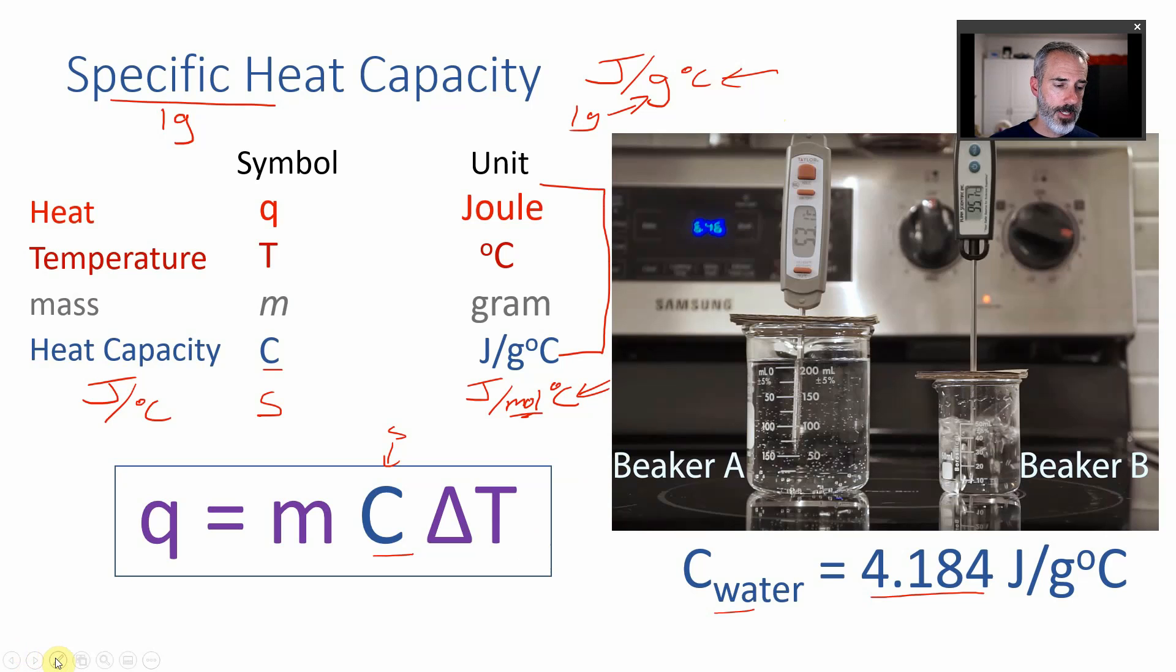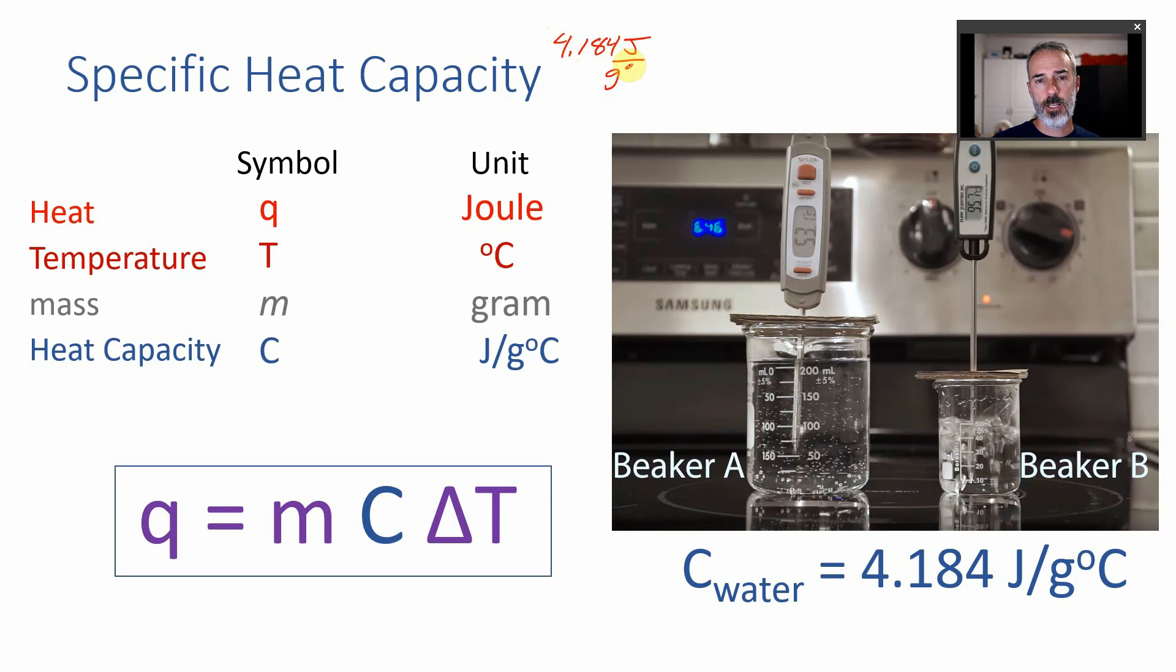One other aside here. Of course I told you you could look all of these up. Let me erase all the ink on the slide. But if the heat capacity of water is 4.184 joules per gram degree Celsius.